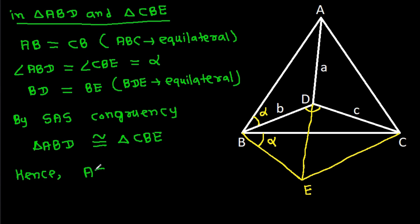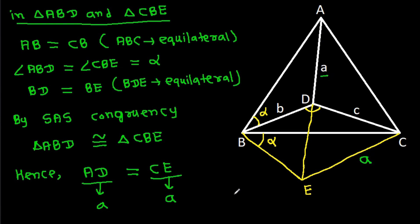Hence AD equals CE, and since AD is a, CE will be a. Also BD equals DE equals BE, and since BD is b, DE will also be b.